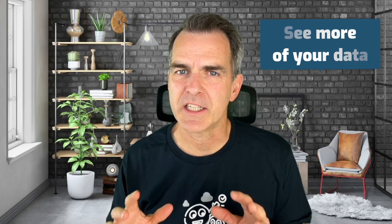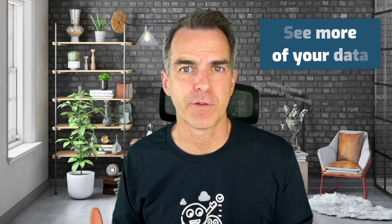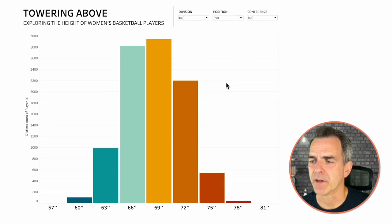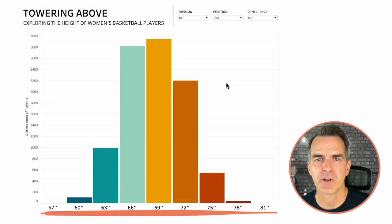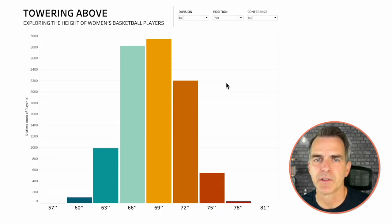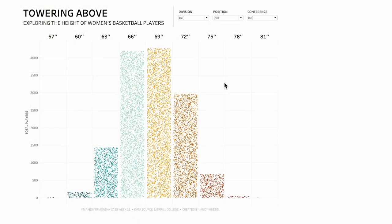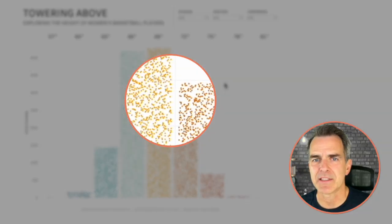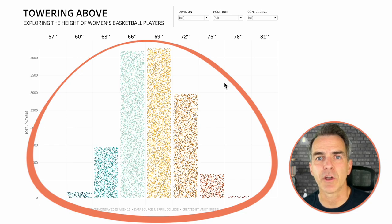Hello everyone and welcome back. Are you tired of the same old boring bar charts? I'm going to show you how to add some flair to your data by creating a jittered bar chart. You'll get to see more of your data without losing the scope of the overall. Here we have the count of basketball players based on their heights — it's a simple bar chart, but we could add some flair by creating this jittered bar chart where each dot represents a player but you can still see the overall shape of the data.